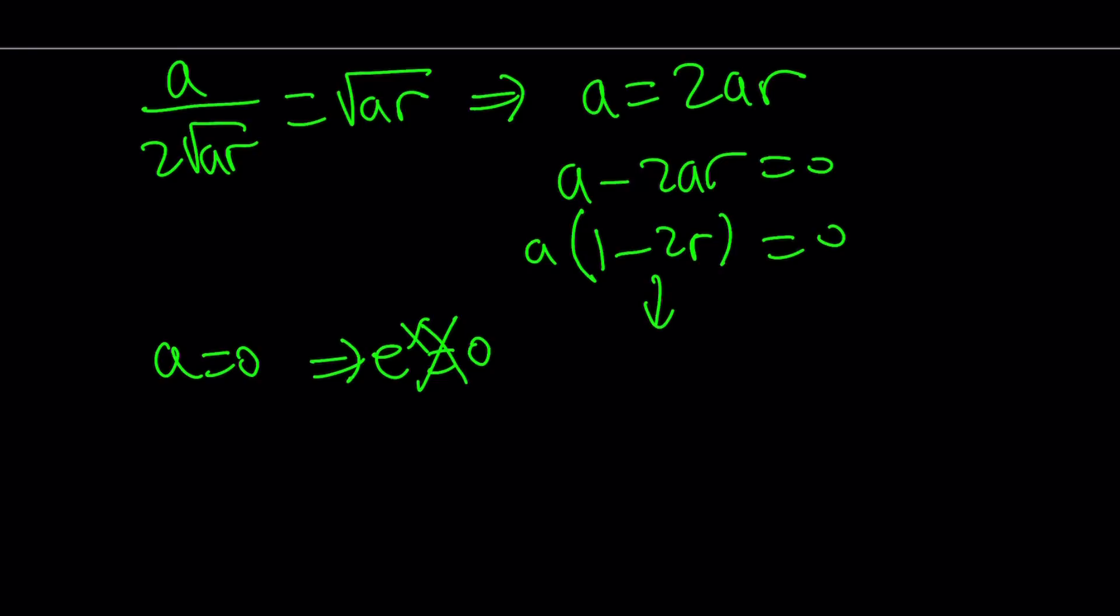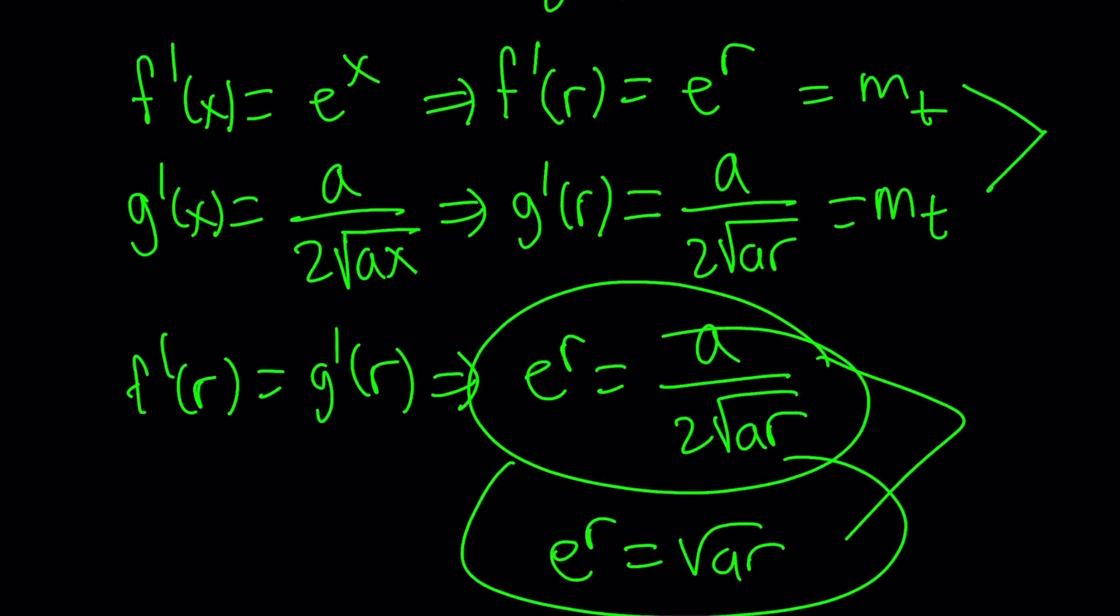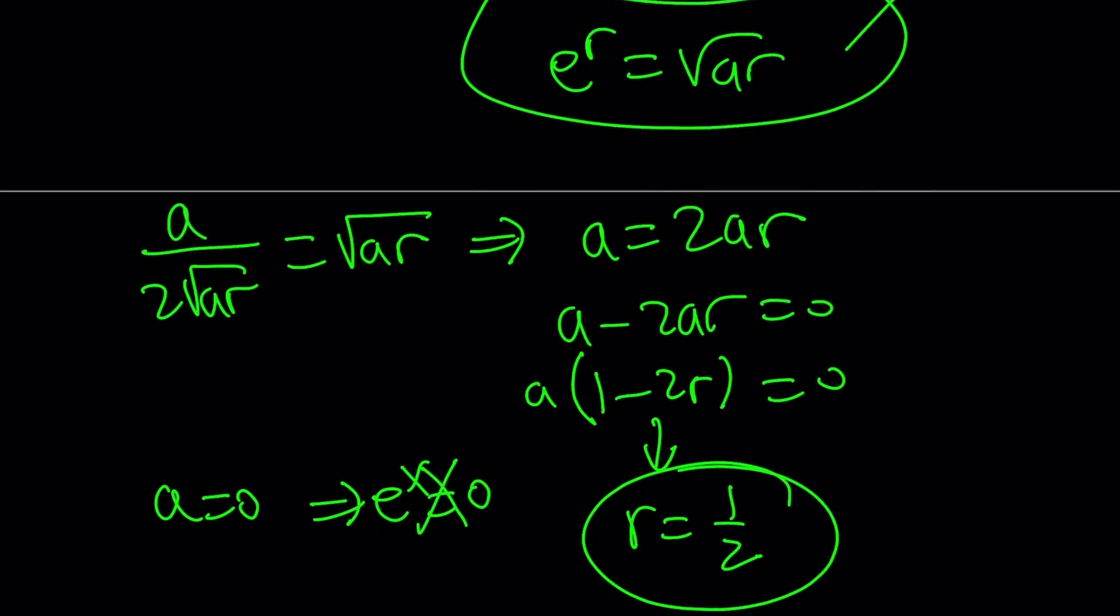Okay, so we have to look at the other thing. r equals one half. And we were looking for the a value, but first we found the r value. So r equals one half makes these two curves tangent. And we're going to look at the graph, obviously. But how do you find the a value from here?